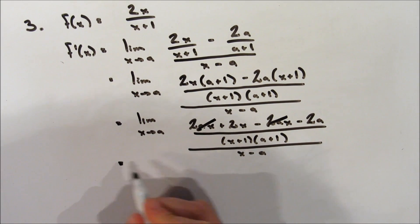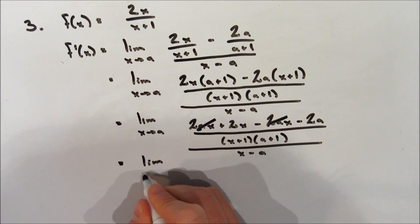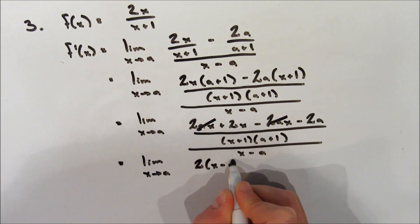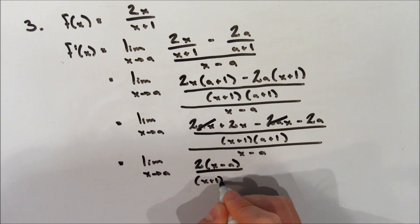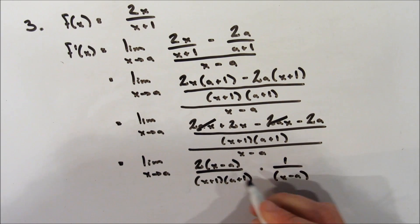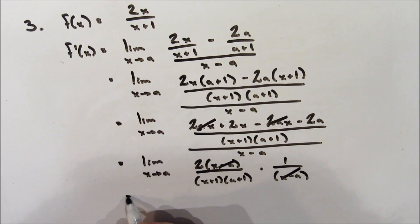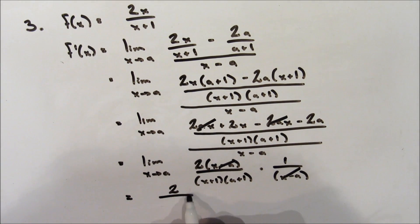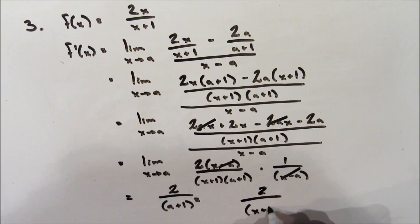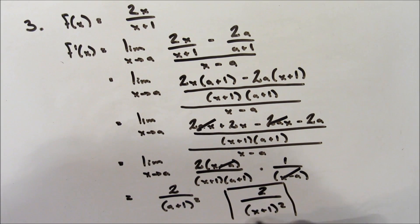So now we can cancel out the 2ax terms, which leaves things a bit simpler. We can factor out the 2, giving (x minus a) in the numerator, still over (x plus 1)(a plus 1), and multiply by 1 over x minus a. Those terms cancel out. Now we can evaluate our limit by subbing a in everywhere there's an x, which gives us 2 over (a plus 1) squared. Since we're keeping it general, we sub x back in for a, giving f'(x) equals 2 over (x plus 1) squared.